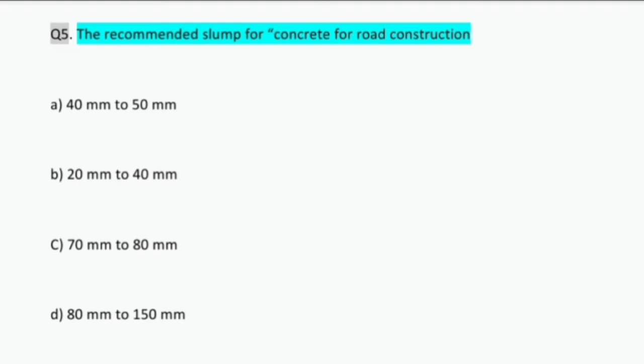Question number five: the recommended slump for concrete for road construction. What is slump value? For checking the workability of concrete we conduct some tests. One of them is the slump cone test. According to the IS code, the slump value should be for road construction 20 mm to 40 mm.